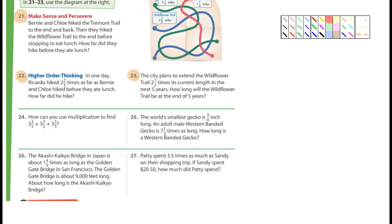Well, look at 24 for a moment here. I do want you to do it. How can you use multiplication to find 3 and 3 fifths plus 3 and 3 fifths plus 3 and 3 fifths? Well, what would that be? That would be 3 and 3 fifths times 3. How would you convert that? 3 times 5 is 15 plus 3 is 18. So, it's 18 over 5 times, what do we do with the 3? It becomes 3 over 1. That's how you would solve it. So, do 24.